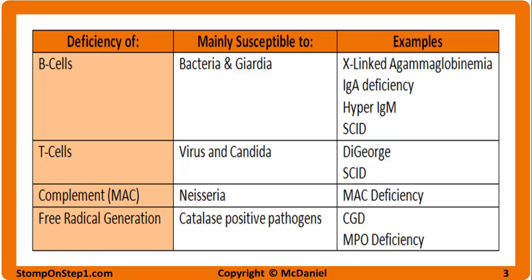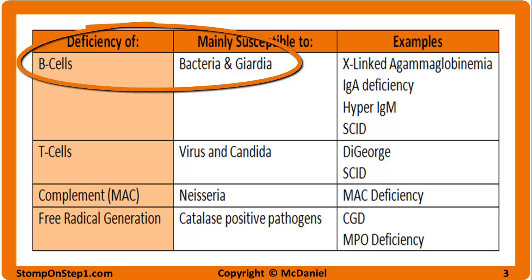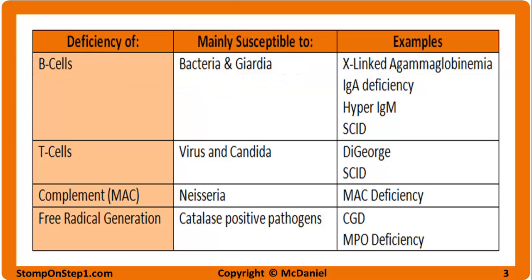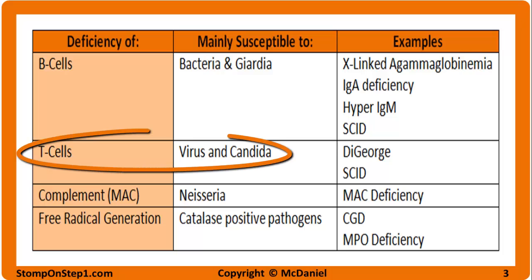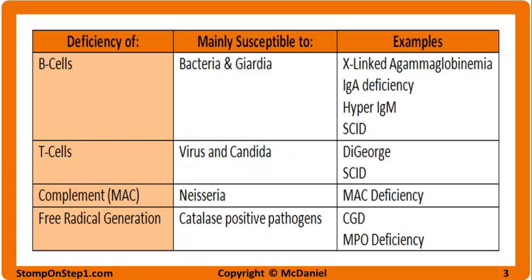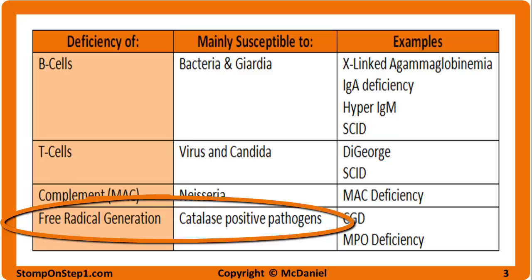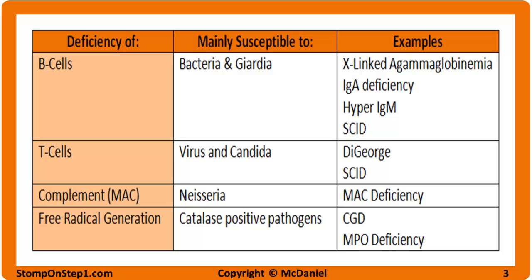This table is somewhat oversimplified but for Step 1 it should help you get these questions correct. When B cells aren't functioning properly you'll primarily see bacterial and Giardia infections — B for B cell and bacteria. When T cells are deficient you'll primarily see viral and Candida infections. When the complement MAC complex is deficient you'll primarily see Neisseria infections. When there's a problem with free radical generation you'll mostly see problems with catalase positive pathogens.